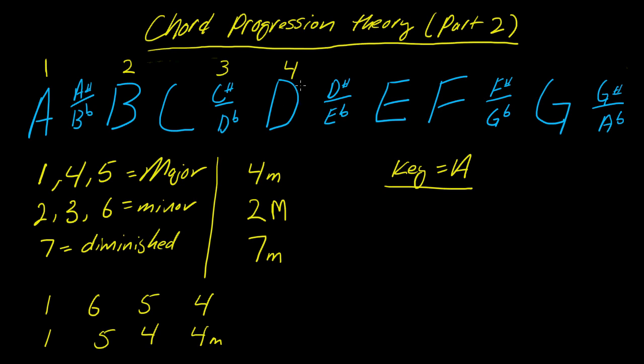Five is a whole step, which would be an E. Six is a whole step, which would be an F sharp or G flat. Remember, we're not going to be talking about the correct one because they're both the same note, just two different names. Seven would be a whole step away, which would be a G sharp or A flat. And then there would be a half note to complete this scale, which would take you back to one.